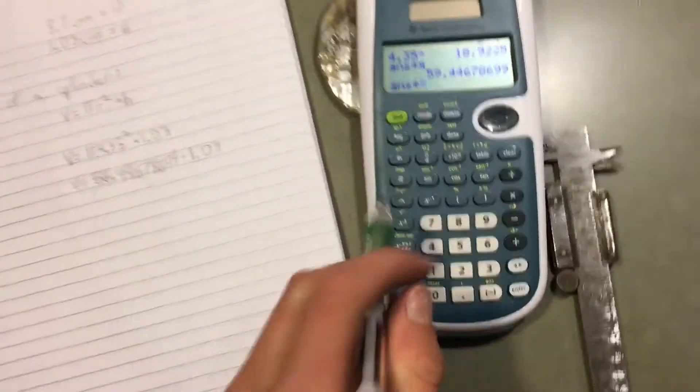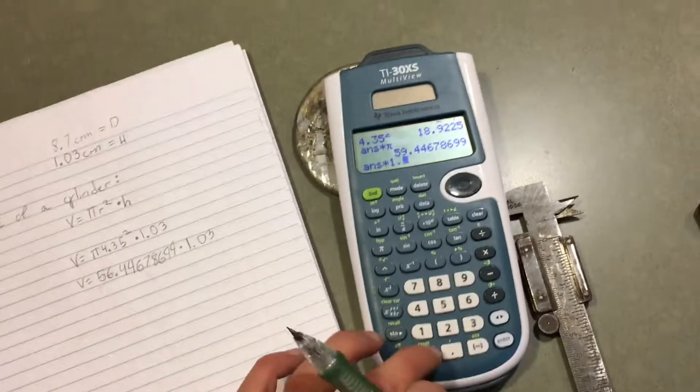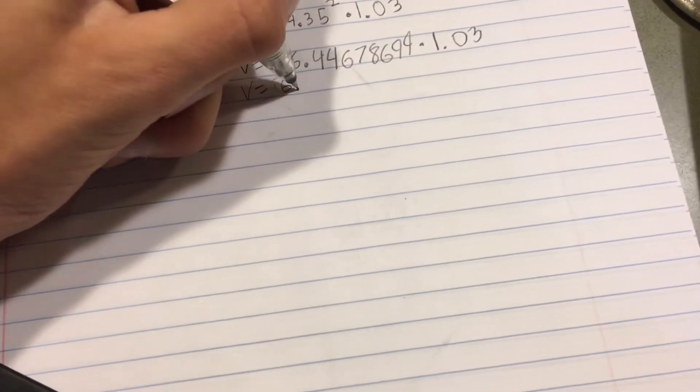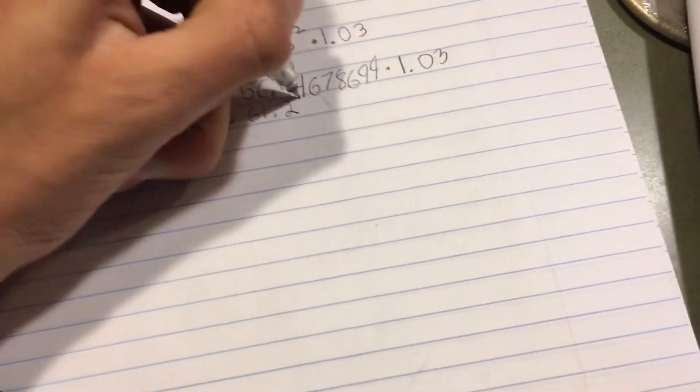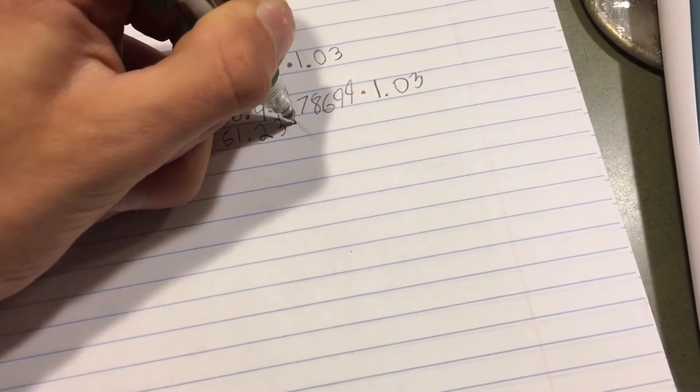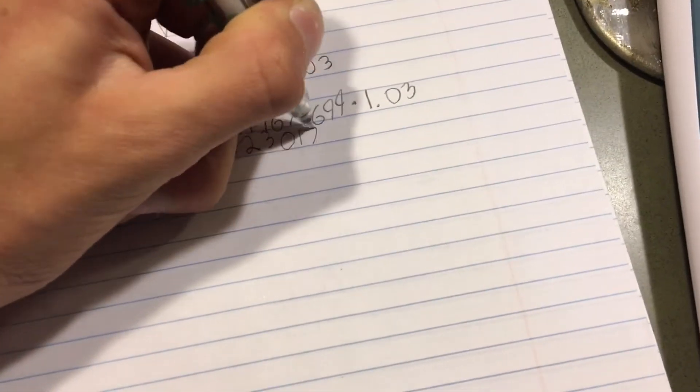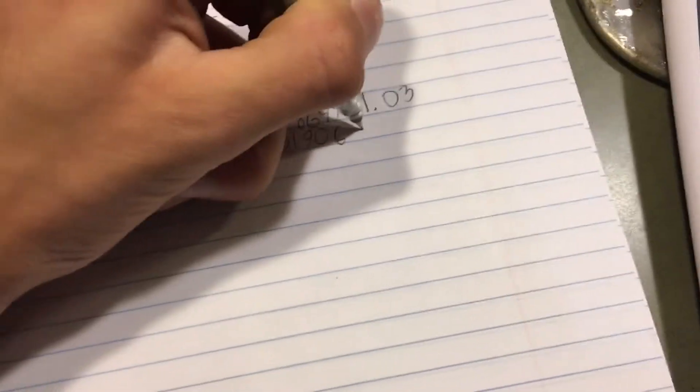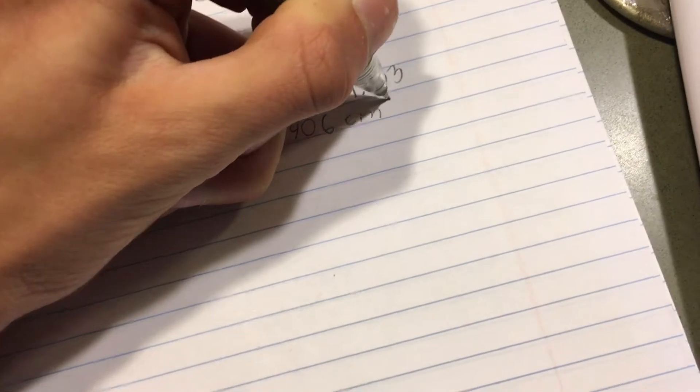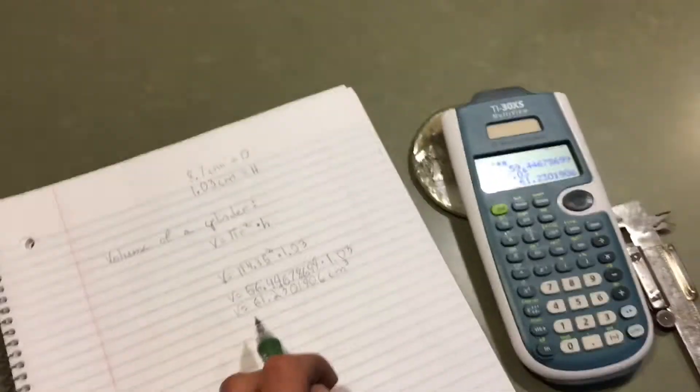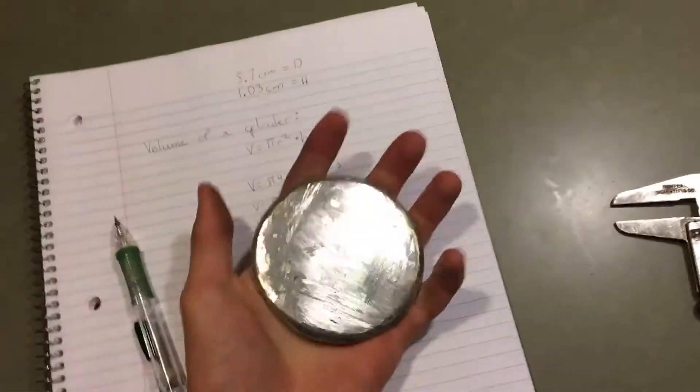So we're gonna, since we still have it in our calculator... okay, so our volume is 61.2301906 centimeters cubed. Okay, so we have our volume of this guy, that's good.